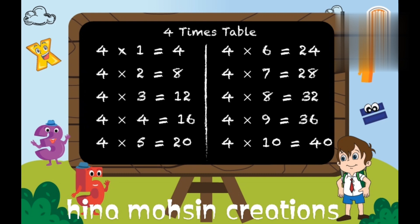Four sixes are twenty-four. Four sevens are twenty-eight. Four eights are thirty-two. Four nines are thirty-six. And four tens are forty.